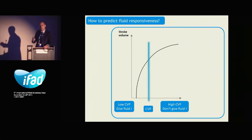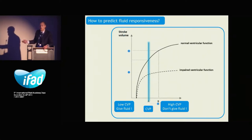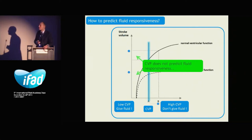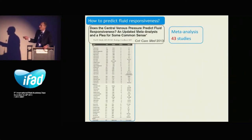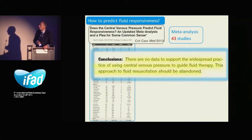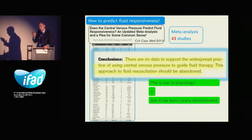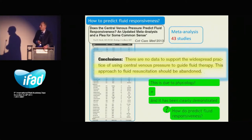But the problem is that it doesn't work. The basic physiology shows that a given value of CVP, a static marker of preload, is not indicative of fluid responsiveness. This is demonstrated by many studies. Looking at the meta-analysis by Marik and Cavallazzi — 43 studies — they concluded that there are no data to support the widespread practice of using CVP to guide fluid therapy, and that this approach should be abandoned. I don't know how it's still possible today to use CVP to predict fluid responsiveness; measuring CVP for other reasons may be reasonable, but not for predicting fluid responsiveness.